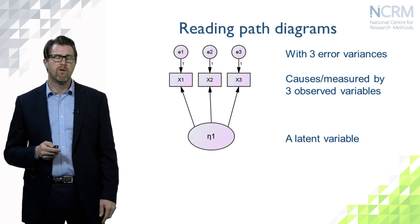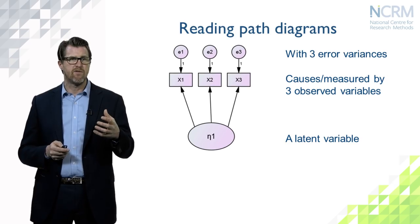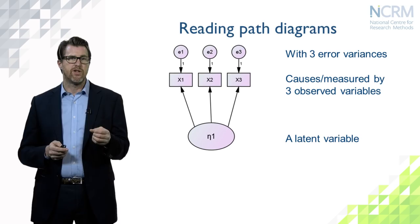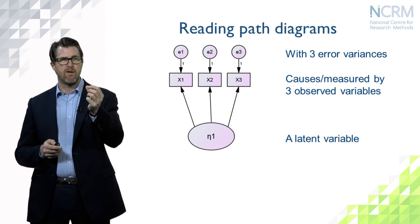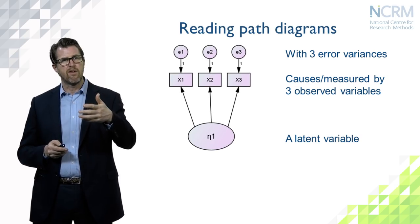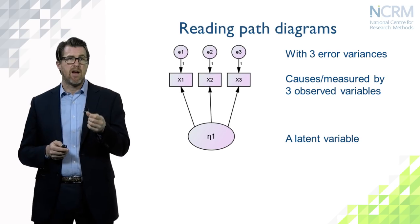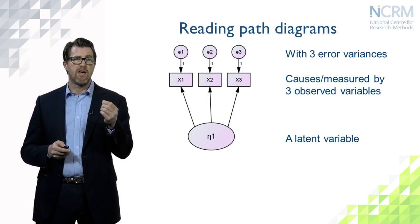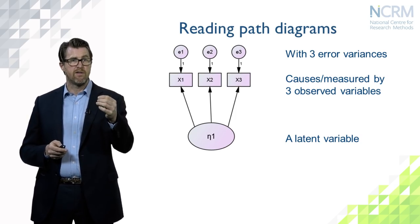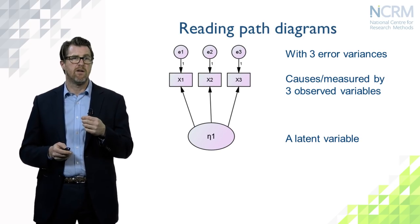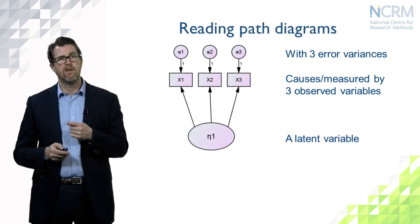Here are some simple path diagram examples showing measurement models — confirmatory factor models. We have eta1, a latent variable shown as an ellipse, which causes three observed variables x1 to x3. At the top of the diagram are three error variances e1 to e3, one for each equation: eta1 predicts x1 with some error, x2 with some error, and so on. That's a simple path diagram for a factor model.